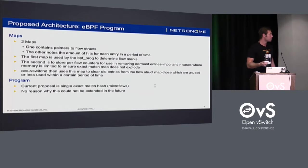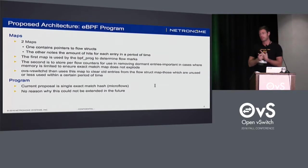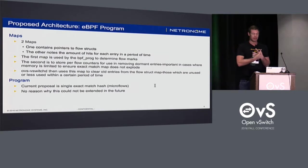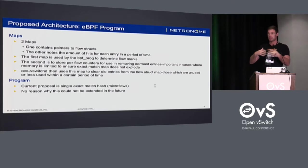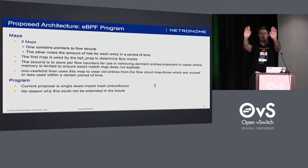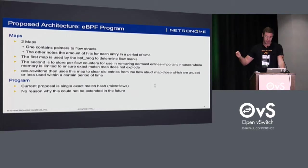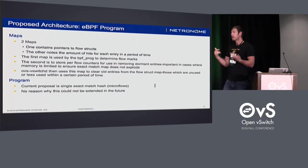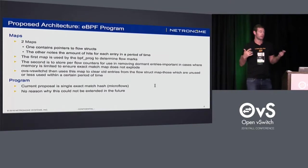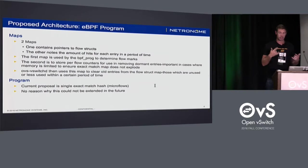The eBPF program would be very simple: two maps — one containing the flow pointing to the flow structures, the other just noting the amount of hits for each entry in a period of time. That period of time needs some work, but it's purely to monitor how many times flows are getting hit, so we can use that as a mechanism to clear flows. If the two hash tables match up, clearing an entry is easy since you know which entry it is. The current proposal would just be a single exact match hash, which could obviously be extended in the future — adding wildcarding, depending on where the community wants to take this.